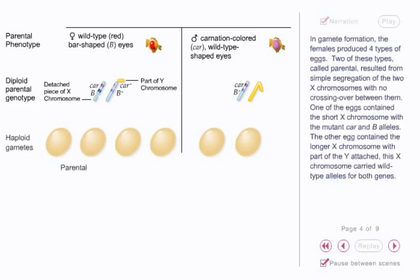In gamete formation, the females produced four types of eggs. Two of these types, called parental, resulted from simple segregation of the two X chromosomes with no crossing over between them. One of the eggs contained the short X chromosome with the mutant CAR and Bar alleles. The other egg contained the longer X chromosome with part of the Y attached, and this X chromosome carried wild-type alleles for both genes.